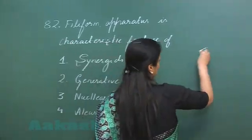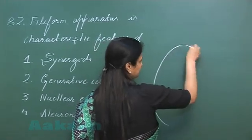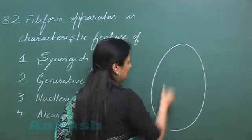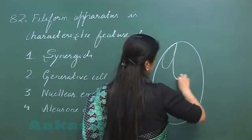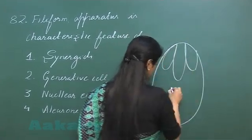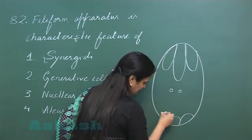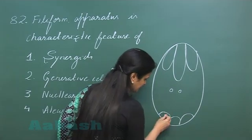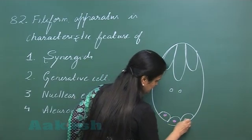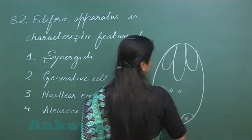Now this is female gametophyte in the angiospermic plant. You know that the female gametophyte has seven cells and eight nuclei.